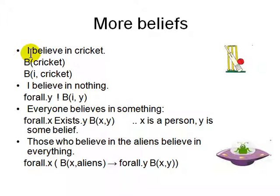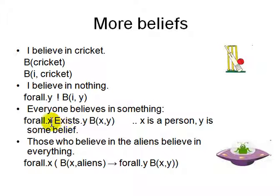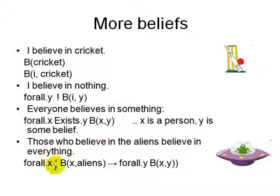'I believe in cricket' — you say cricket believe I. What does it mean to believe in something? We'll come to that later. 'I believe in nothing' — for all Y, I don't believe in Y. 'Everyone believes in something' — for all X, there is a Y such that X believes in Y. The Y is different for each X; it's not the case that everybody believes in the same Y. 'Those who believe in aliens believe in everything' — for all X, if X believes in aliens, then X believes in every Y.